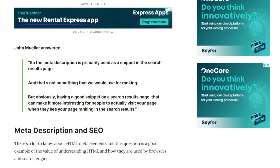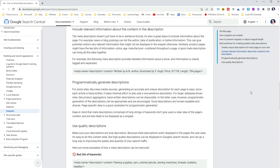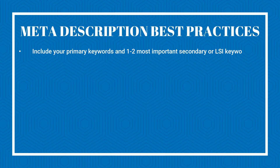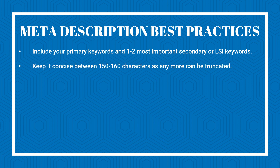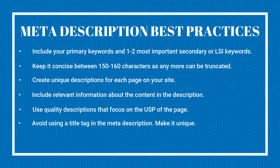Meta descriptions further help Google and users understand what your page is about, and they can increase your page click-through rate. John Mueller confirmed that meta descriptions can influence the search rankings for your page. Additionally, Google may sometimes use a different snippet from your content instead of the meta description you provided, especially if it thinks that snippet is more relevant to the user's query. Here are some meta description best practices: include your primary keywords and one or two most important secondary or LSI keywords; keep it concise between 150 to 160 characters; create a unique description for each page on your site; include relevant information about the content; use quality descriptions that focus on the USP of the page; and avoid using the same text as your title tag — make it unique.